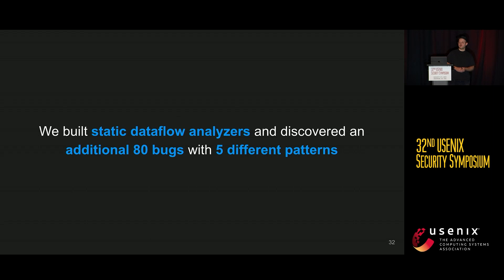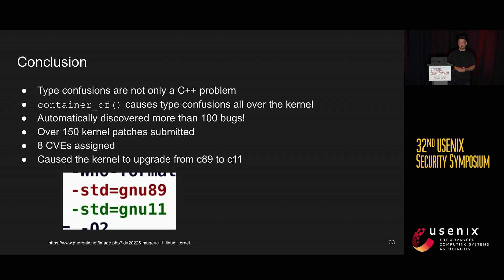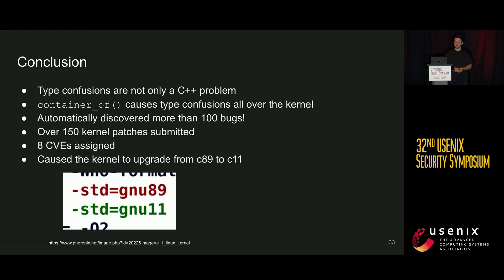Based on our five bug patterns, we built static data flow analyzers and discovered an additional 80 bugs. In conclusion: type confusions are not only a C++ problem — container_of introduces them throughout the kernel and similar C codebases using similar macros. We found automatically more than 100 bugs, though not all may be exploitable depending on what out-of-bounds memory is used. In total we submitted more than 150 kernel patches to fix such issues, received eight CVEs, and the kernel had to upgrade from C89 to C11.